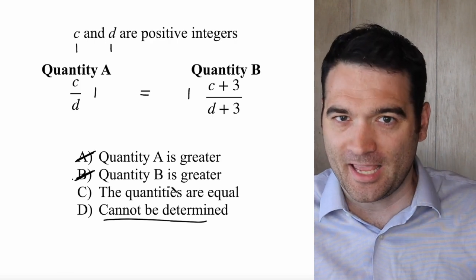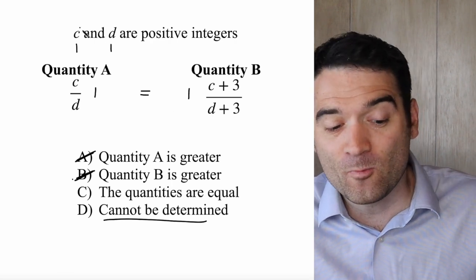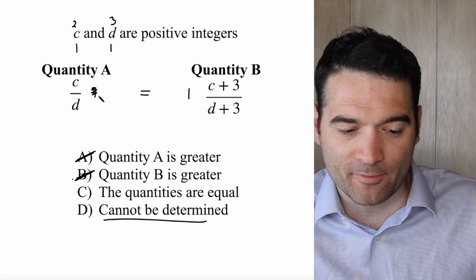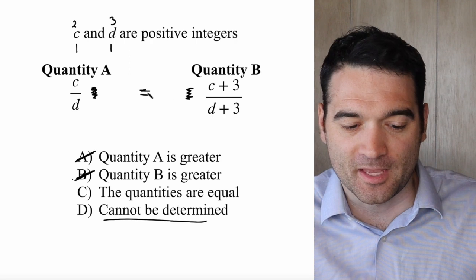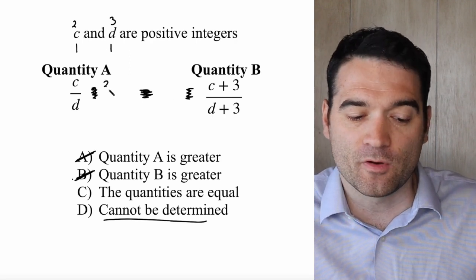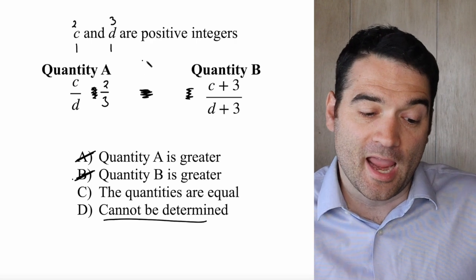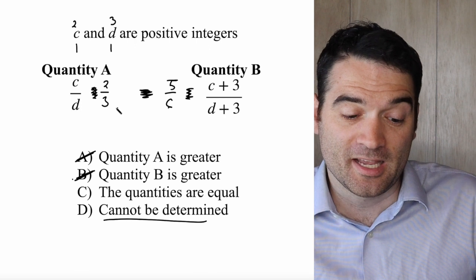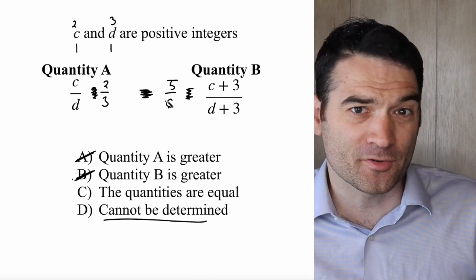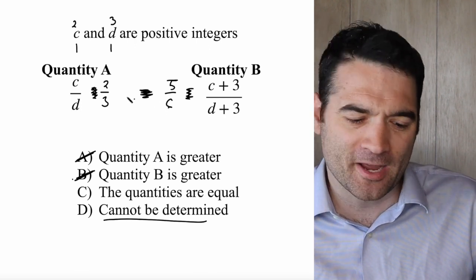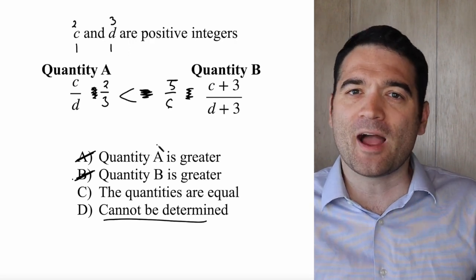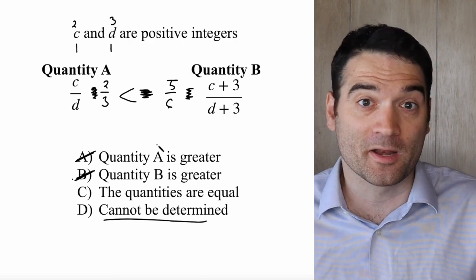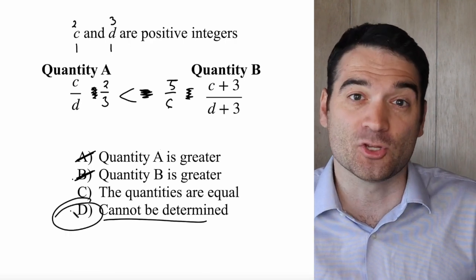I can very easily find a case that contradicts this. Why don't we make C equal to 2 and D equal to 3? If C is 2 and D is 3, then I have 2 over 3, that's 2 thirds. And C plus 3 is 5, over D plus 3 is 6, that's 5 over 6. Is 2 thirds equal to 5 over 6? It's not — you can use your calculator to double check. In this case, Quantity B is greater. So I found one case where the two quantities are equal, and one case where Quantity B is greater. That means the answer cannot be determined.